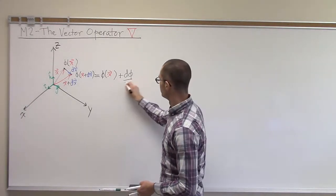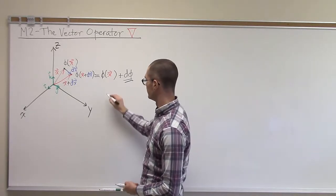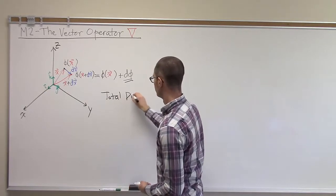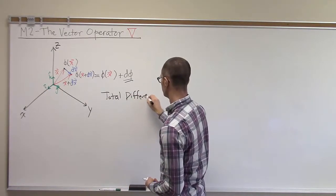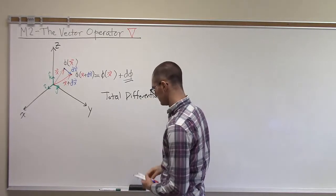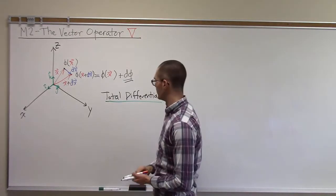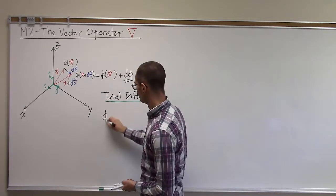And that small change is what we call the total differential of phi. So total differential. We can write that out as d phi.